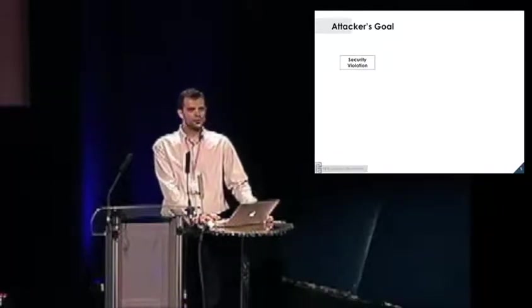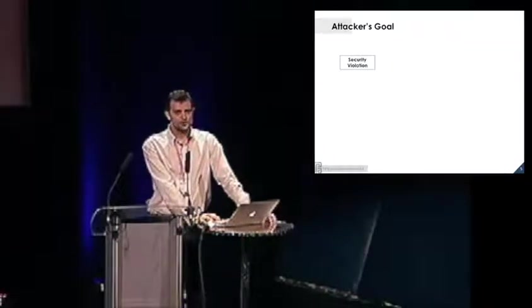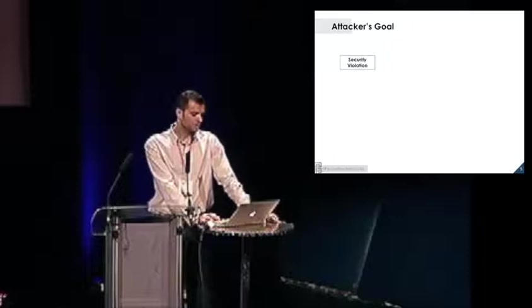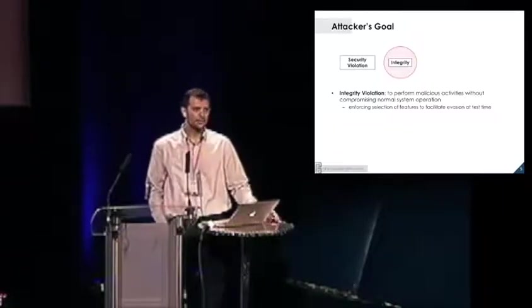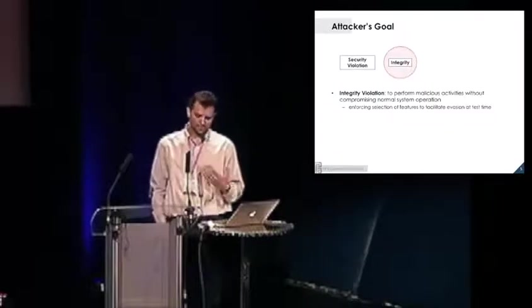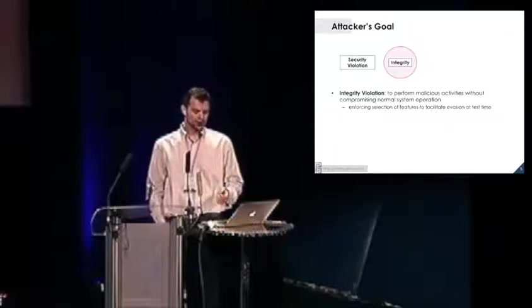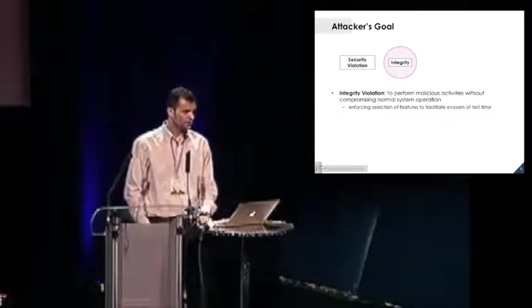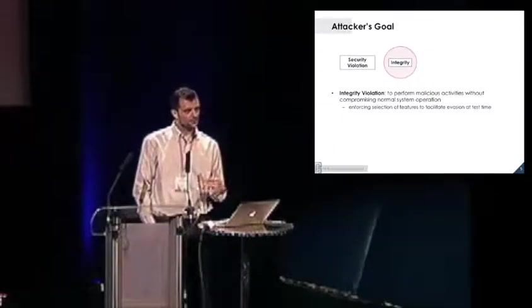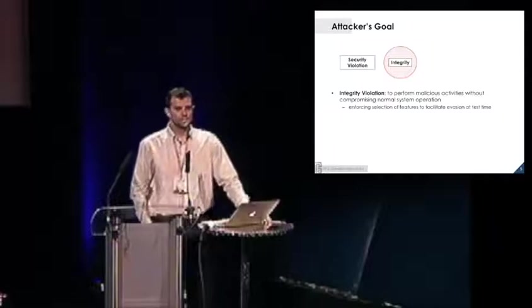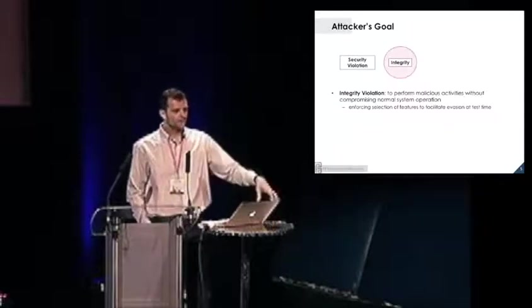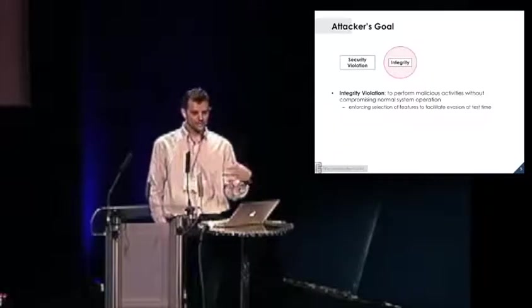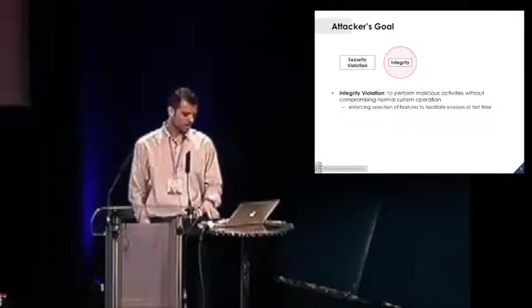The attacker's goal is defined in terms of the desired security violation. You may have integrity violations that usually consist in performing some malicious activities without being caught. The goal is to perform malicious activities without compromising the normal system operation. In the case of feature selection, this may amount to somehow enforcing the selection of some features that will facilitate evasion of the classification system at test time. For example, if you're a spammer and you want to have some spam misclassified as legitimate at test time, you may somehow influence the feature selection procedure to select features which are easier to manipulate at test time to get your spam misclassified as legitimate.